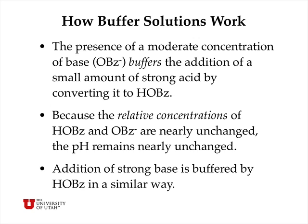The presence of a moderate concentration of base — in this case benzoate anion — buffers the addition of a small amount of strong acid by converting it to benzoic acid. The relative concentrations of benzoic acid and benzoate anion are nearly unchanged, so the pH remains nearly unchanged. Buffers also work the other way, buffering against the addition of a small amount of strong base by converting the acid to its base form, again changing the relative concentrations by only a small amount and raising the pH by only a small amount.